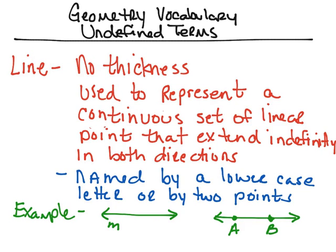The next term is a line. A line has no thickness, and we use it to represent a continuous set of linear points that extend indefinitely in both directions — a set of points in a linear pattern that extend in both directions and never end. That's the indefinitely part.